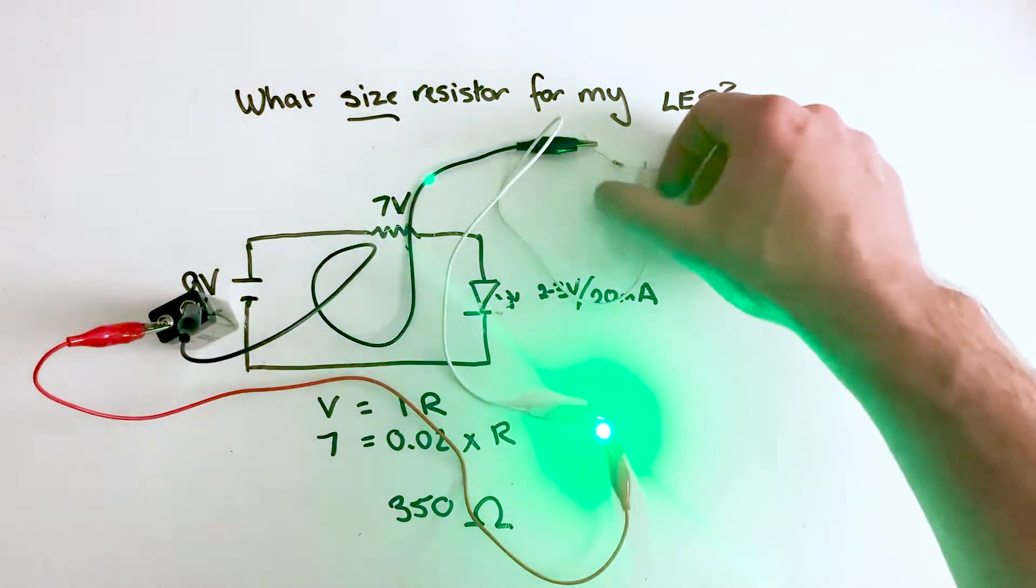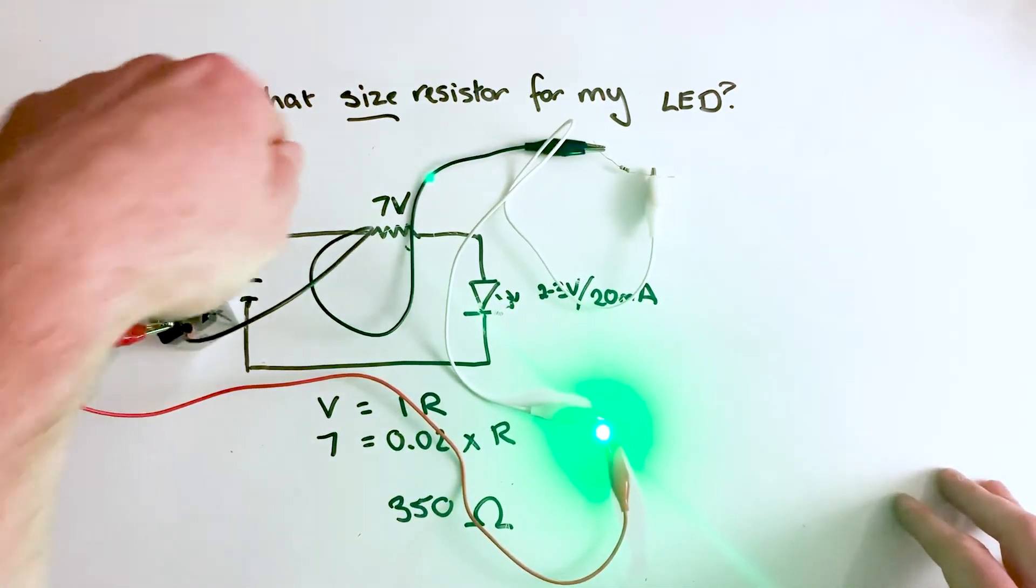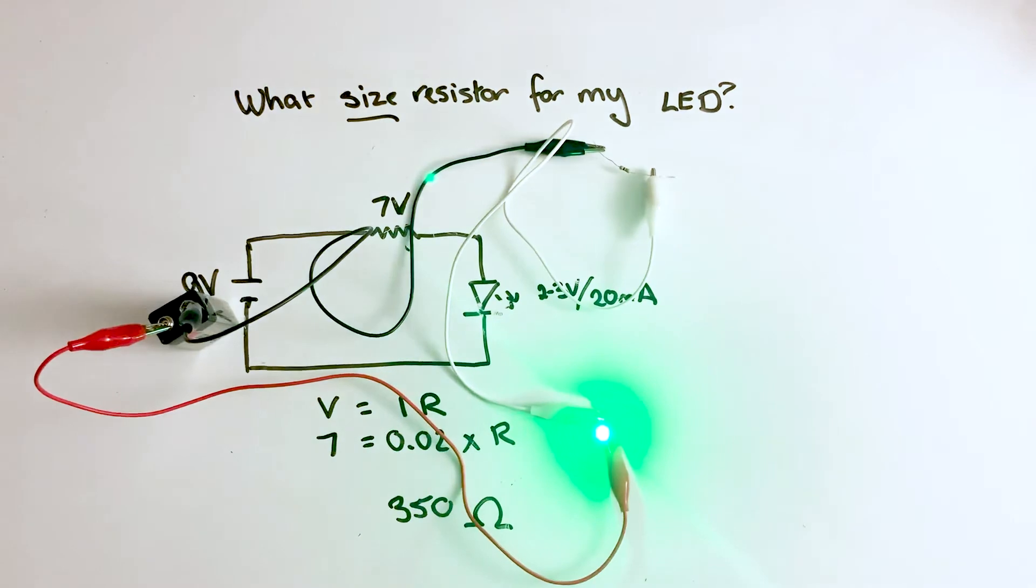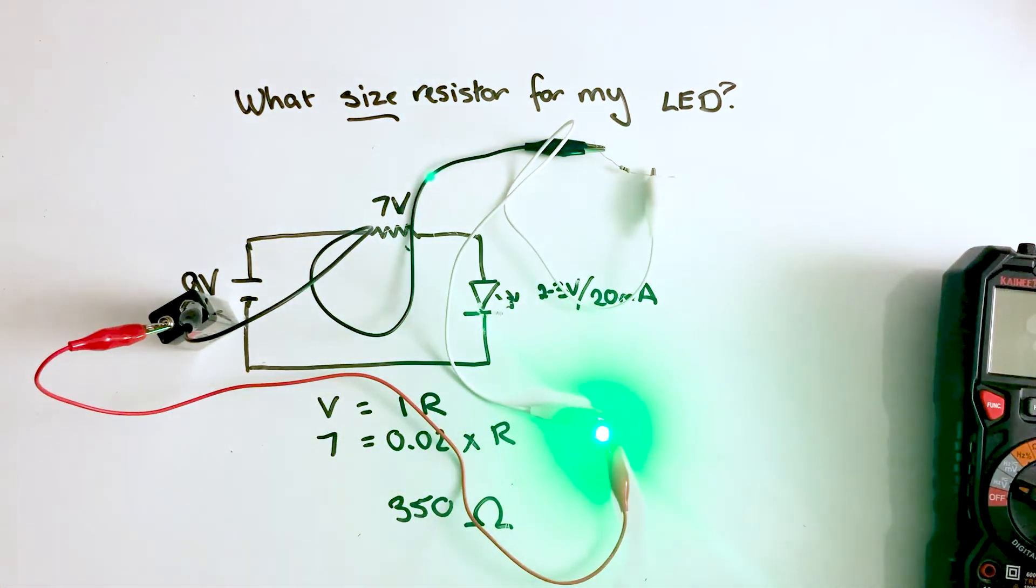Boom! And there we have it. We got our circuit running right now. We start off here at our battery, going through to our resistor, going through to our LED, and then finishing off back at the battery. So let's now test this voltage drop and see how accurate we really are.